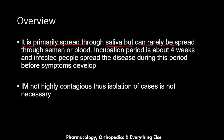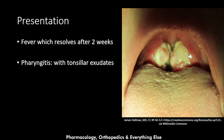The disease can rarely be spread through semen or blood. The incubation period is about four weeks, and infected people can spread the disease during this period before symptoms develop. Infectious mononucleosis is not highly contagious, so isolation of cases is not necessary.